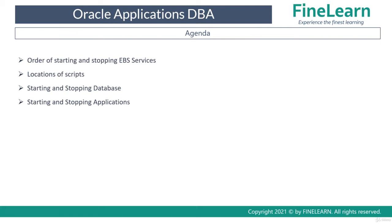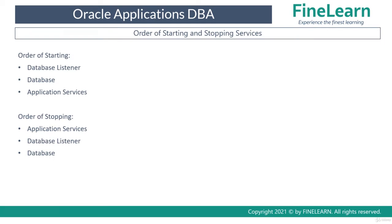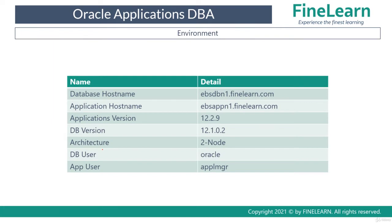Then we'll see how to start and stop the database followed by the applications. The order of starting and stopping services is quite simple: when starting, you always start the database tier first. When stopping, it is the vice versa — first stop the application services, then followed by the database services.